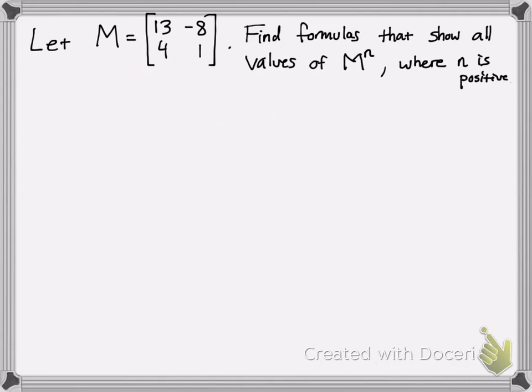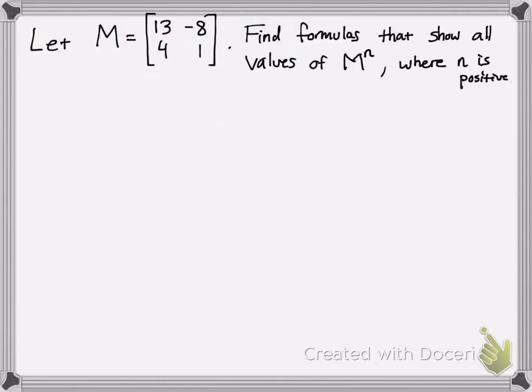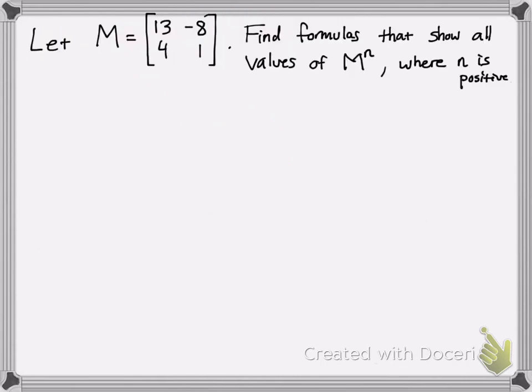So right now, this problem we're going to do is going to show all the possible exponents you can do and how to make a formula for that. So whatever power you want to raise the matrix to, you can do that by using this formula, and you can get that for every matrix you want to use. So we're going to find the formulas that show all values of M to the n power.